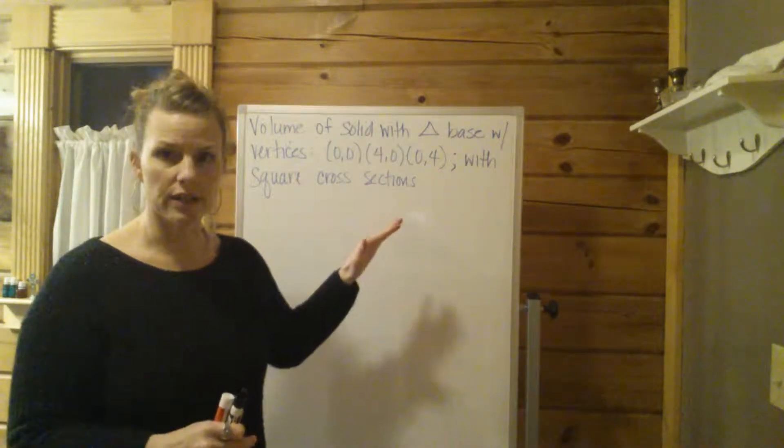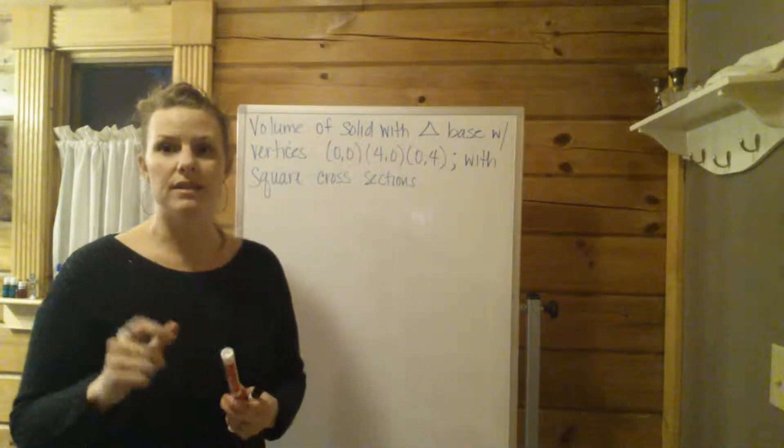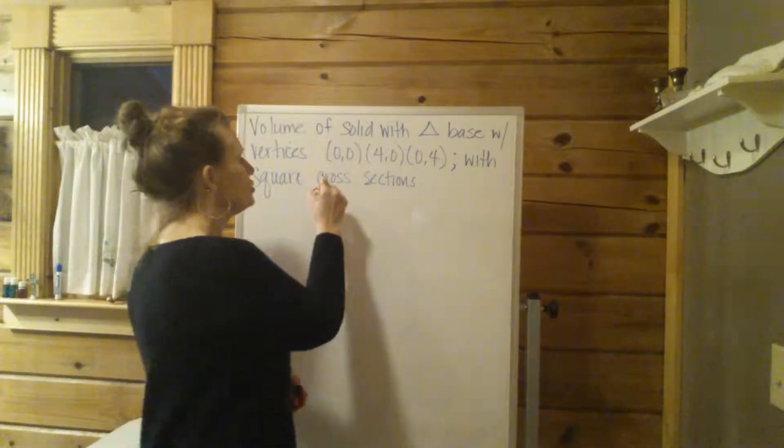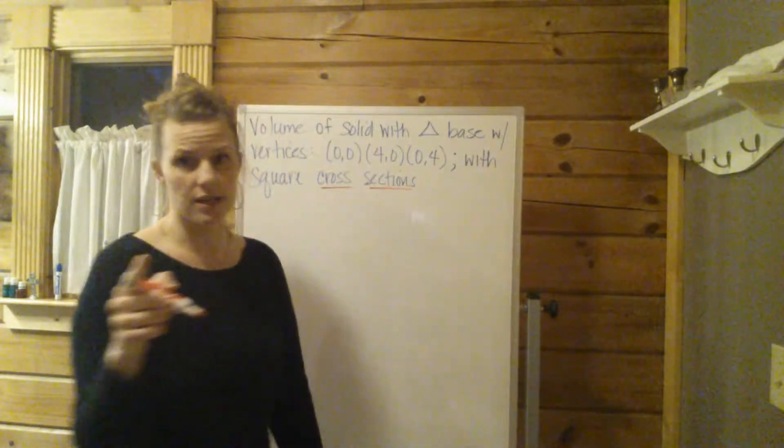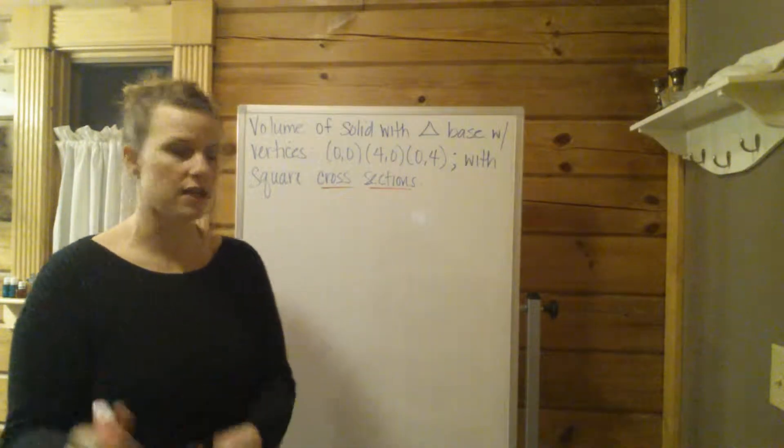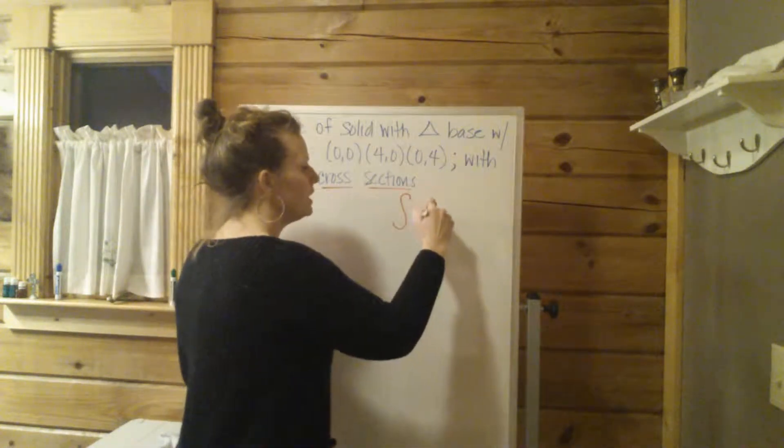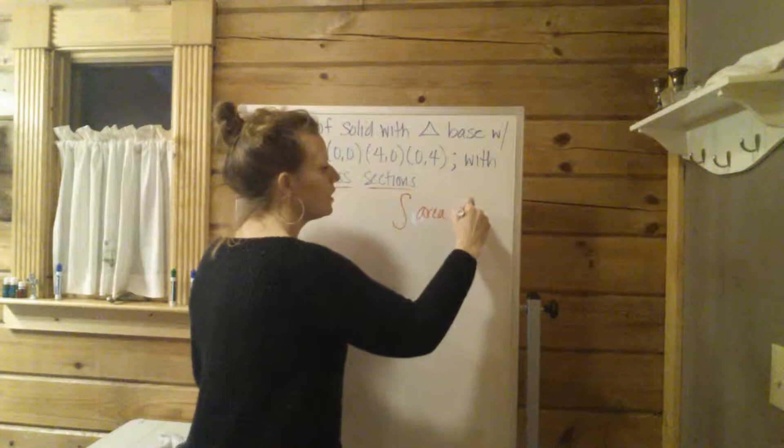So again, where to start? If you look at this problem, what is your trigger? What are your key words? I'm going to say the key words should be first of all cross sections. When you see a volume found by using cross sections, you always have to do the integral of the area of the cross section.